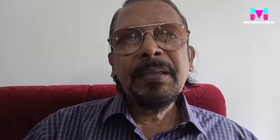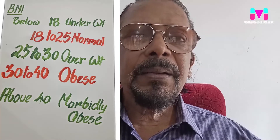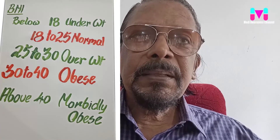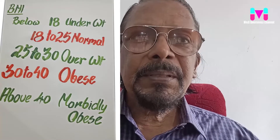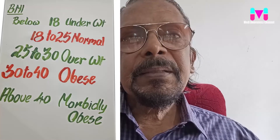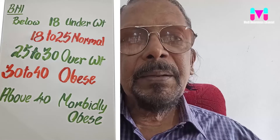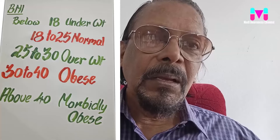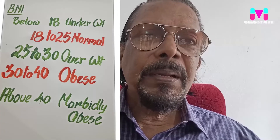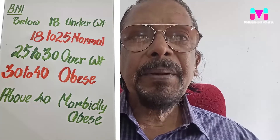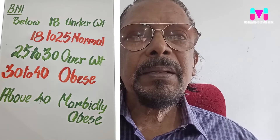A Body Mass Index below 18 is underweight. A BMI of 18.5 to 25 is normal. A BMI of 25 to 30 is overweight. A BMI of 30 to 45 is obese.